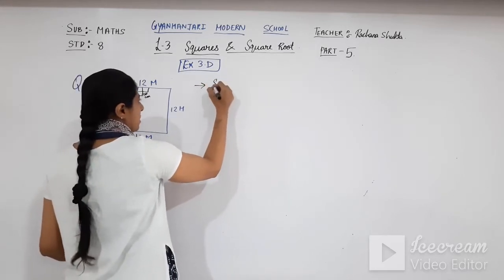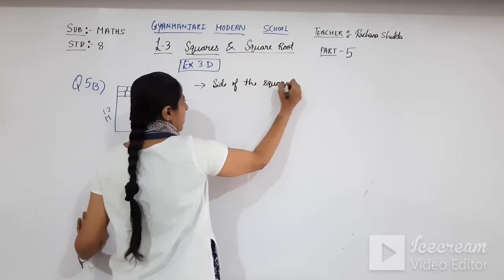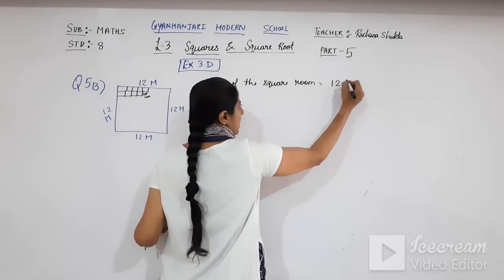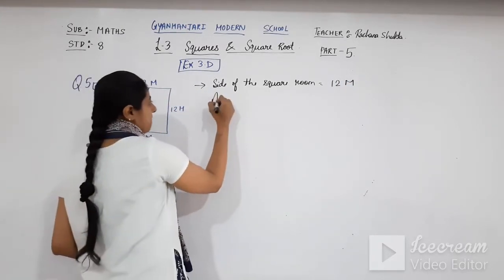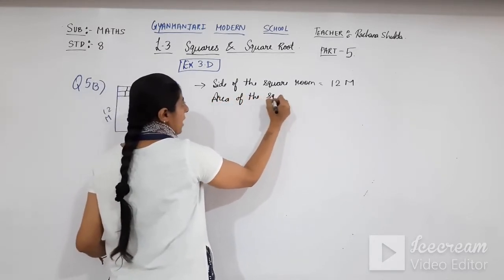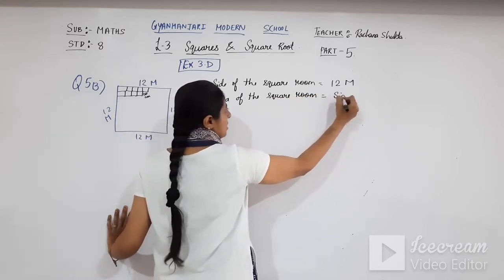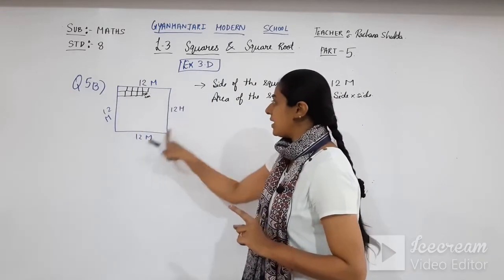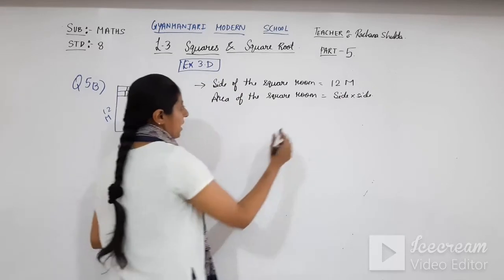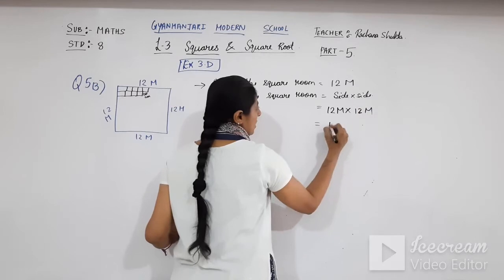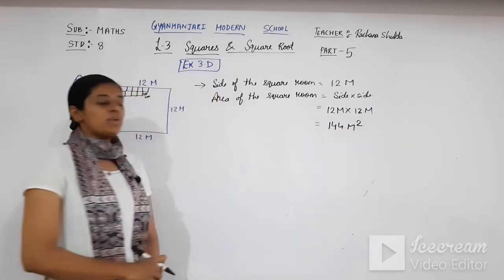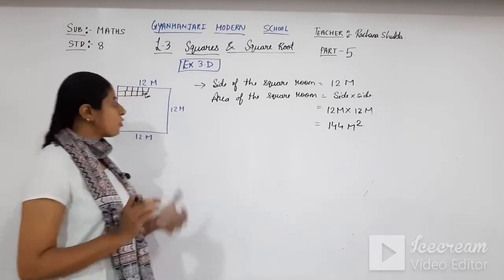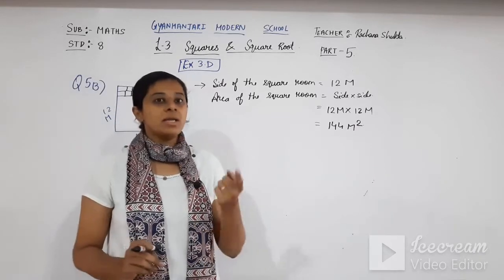First step: side of the square room is 12 meter. Area of the square room = side × side = 12 meter × 12 meter = 144 meter square. Now you have to find out the area of one tile.